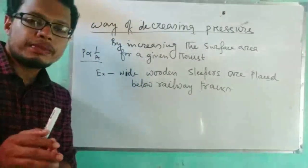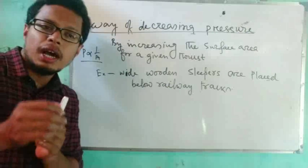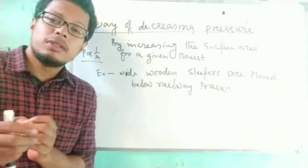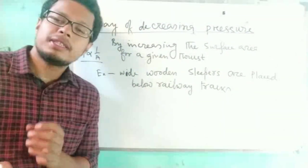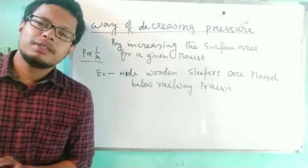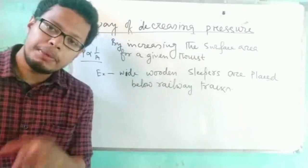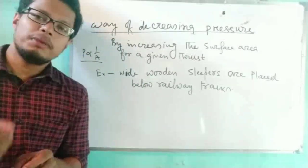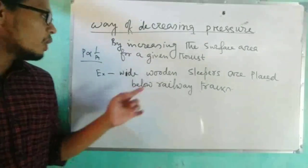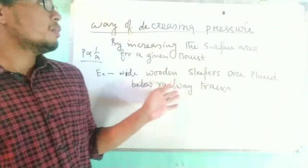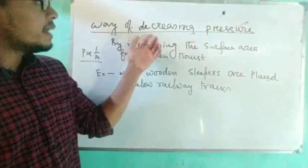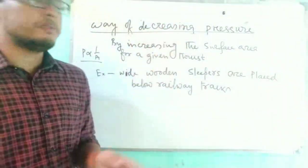Another example: the base of buildings is made thicker or wider than the walls. By increasing the surface area, the pressure exerted by the building on the ground becomes less. This is because P is inversely proportional to A.